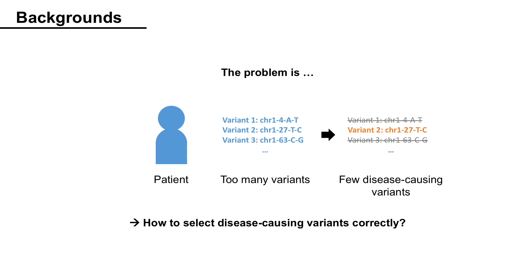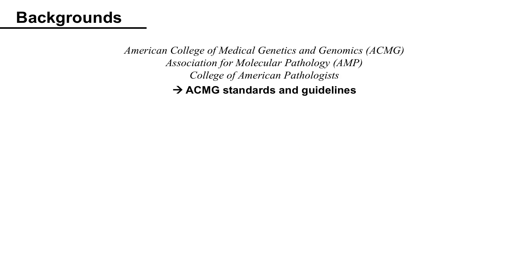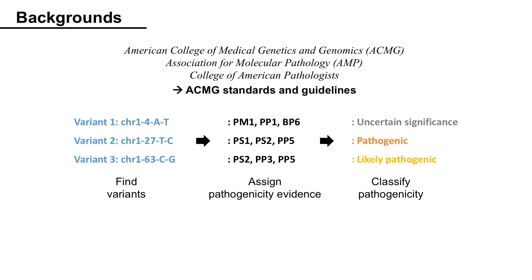How can we select a few disease-causing variants from hundreds of thousands of variants correctly? In order to do this, experts from the American College of Medical Genetics and Genomics, Association for Molecular Pathology, and College of American Pathologists made standards and guidelines for interpretation of variants. We usually call it ACMG guidelines. After identification of variants, the variants are assigned with several pathogenicity evidence by criteria, and the combination of the evidence is used to classify pathogenicities of variants.